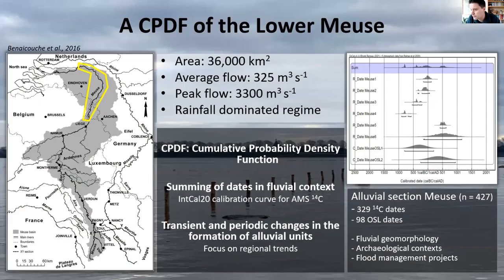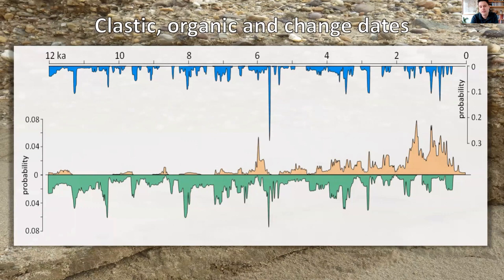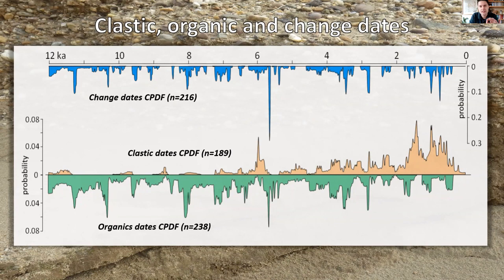We grouped the data into three datasets: clastic dates gathered from clastic deposits, organic dates from organic deposits such as peat formation within a fluvial context, mostly in abandoned river channels, and change dates — dates identifying major changes in the distribution of sediment in the river valley, either from organic to clastic deposits or the other way around.